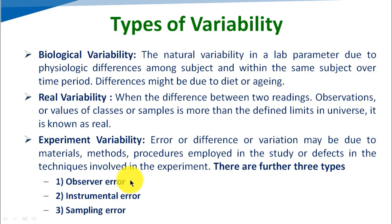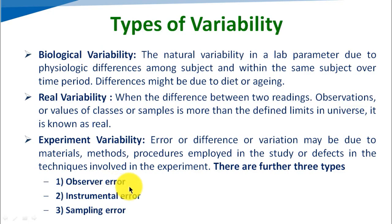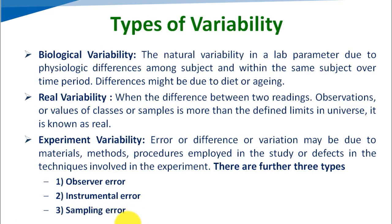Experiment variability can have three reasons. First is observer error — if the observer does not observe properly, error can occur. For example, if we are measuring the weight of a tablet and the observer does not read the instrument correctly, an error will appear in the result. Second is instrumental error — if the instrument is not working properly, that is instrumental error. Third is sampling error — if the person makes an error during sampling, that is known as sampling error.